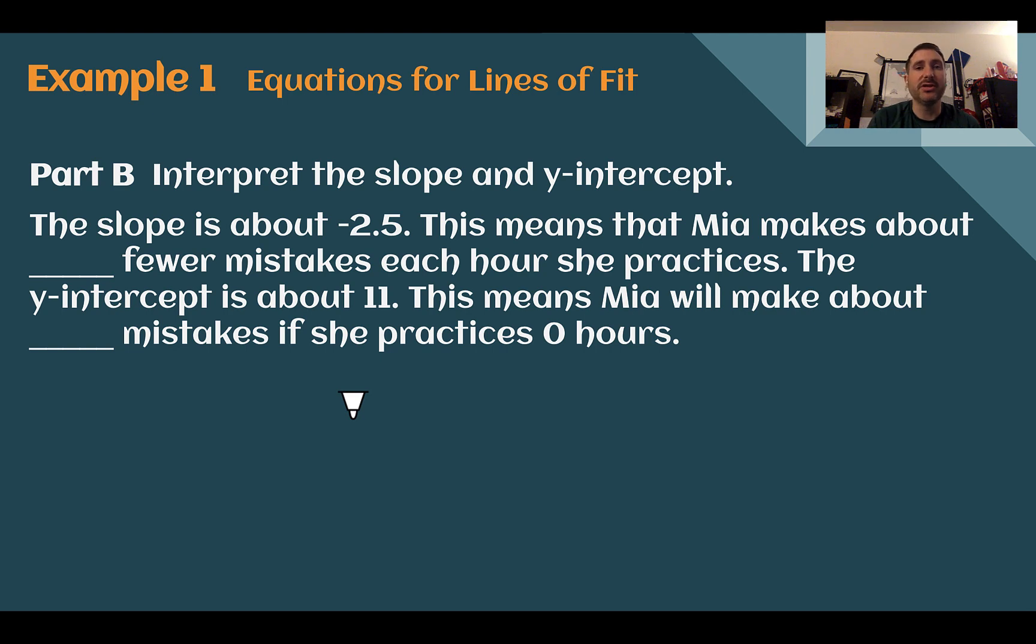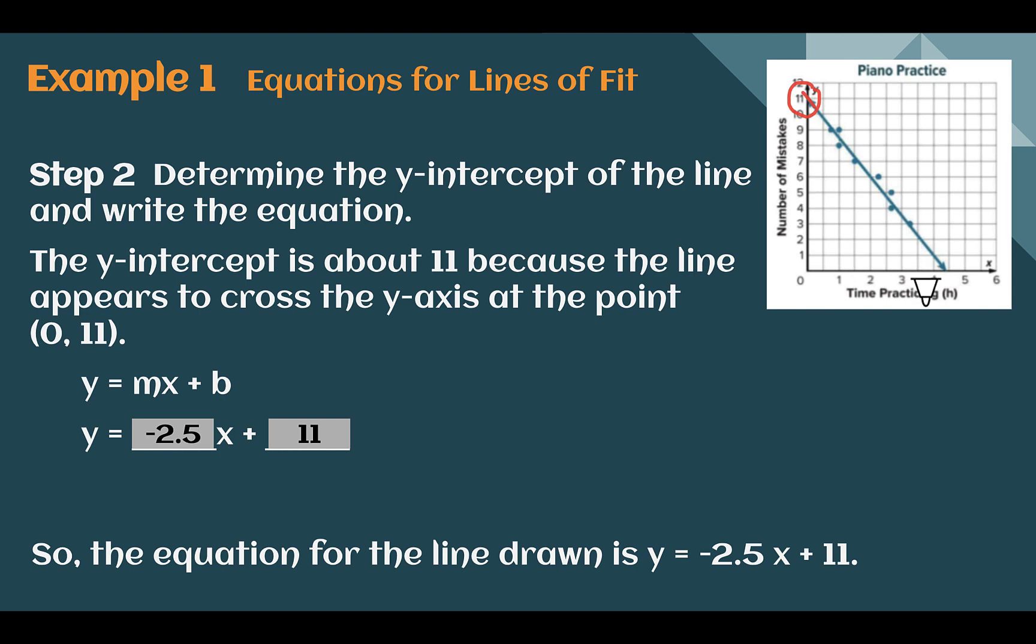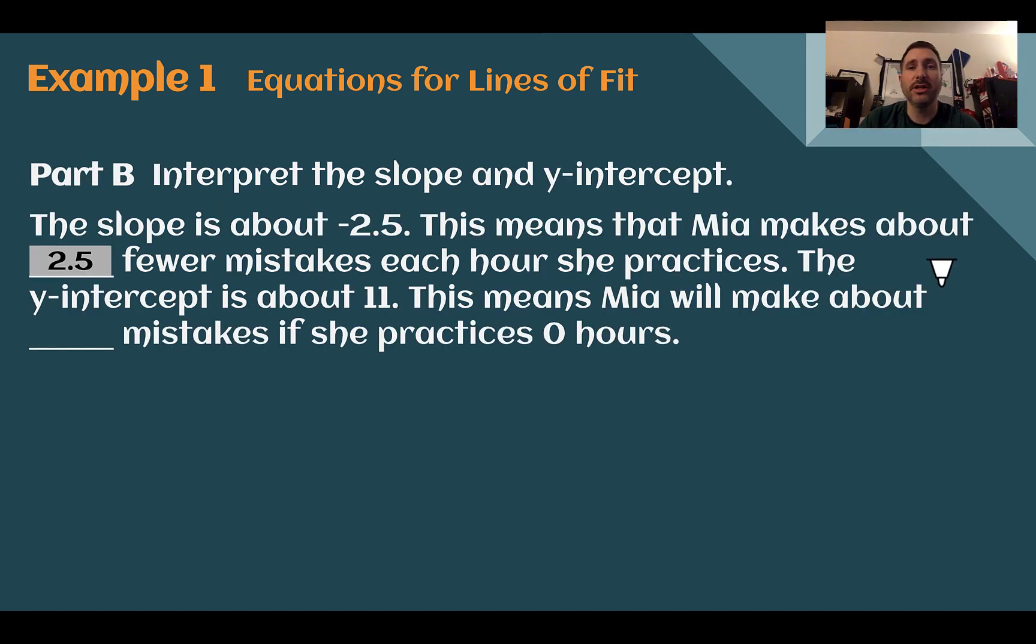Last, let's interpret our slope and our y-intercept. So our slope was about negative 2.5. That's what we determined using our line. This would mean that she's making about 2.5 fewer mistakes for each hour she practices. If you're having trouble interpreting what it is, look at the graph. Look at the units. Your units are going to tell you what is happening. So it's always the y over the x for your slope. So the number of mistakes over the time practicing. So those would be the two things that your slope needs to be about. She's making the number that it says of the y every one hour she practices more. So every one of the x.